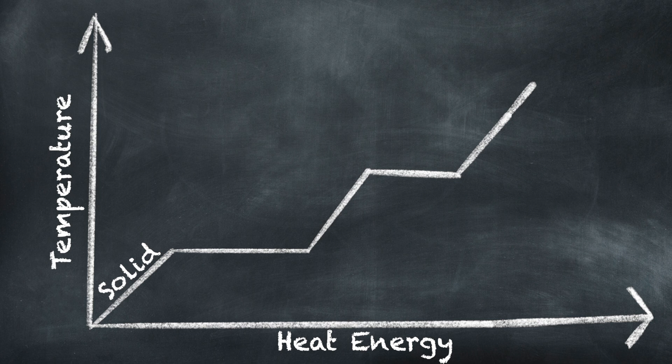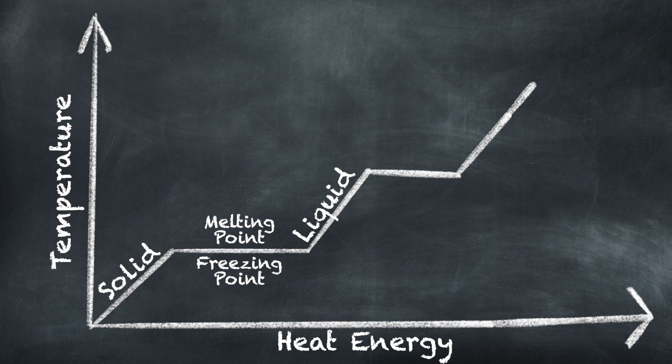The first slant up is the solid state. When we plateau off at that first step, that is where we have the change from solid to liquid — in other words, the melting point. If we're going backwards, that would be the freezing point, so this graph can go either way. Then the second slant is the liquid state — as temperature increases while we're in the liquid state, we eventually level out and change to another state.